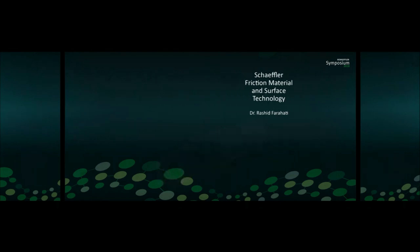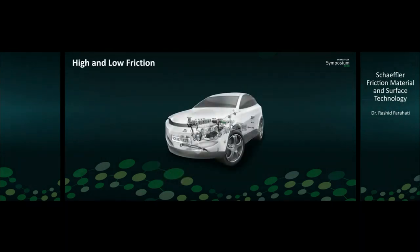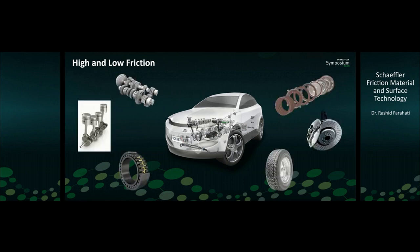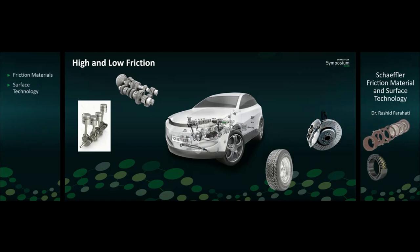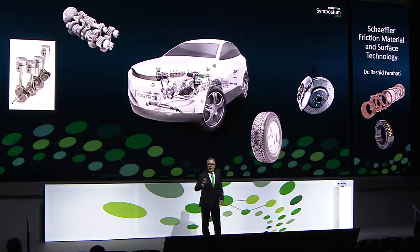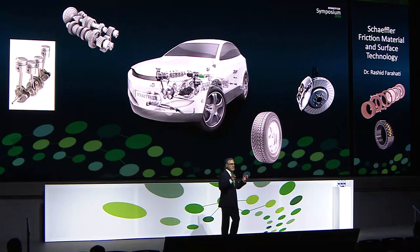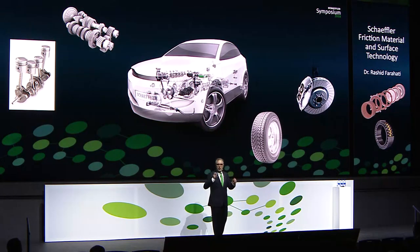Let me explain what I want to talk about today. In many applications, like automotive, in some areas we want to reduce friction, and in others we want to control friction or increase friction. Today I'm going to talk about both. First, in friction material, I'm going to talk about how friction material works and how we can design it. Like Patrick said, we want to show it's not a black box — it's science. I'm going to show you our trick to making good friction material. At the end, in Surface Technology, I want to tell you how we can bring friction coefficient low.